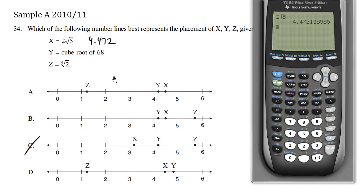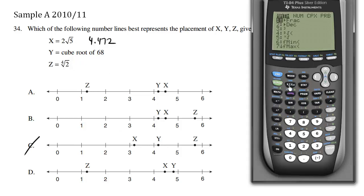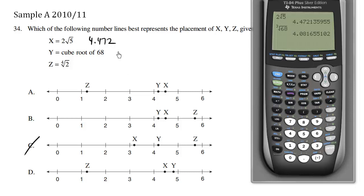y equals the cube root of 68. I'm going to press math and I'm going to go down to the cube root, press enter, and 68, enter. We have 4.082 approximately, and so this is y. Y should be a little bit after 4, so choice C is incorrect because y is too far over.